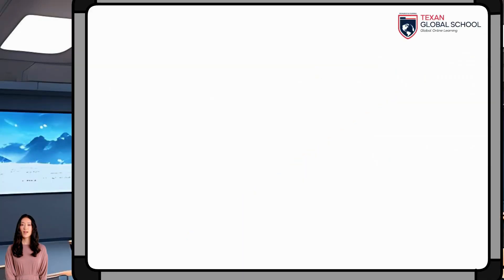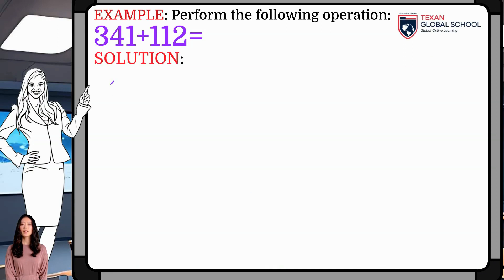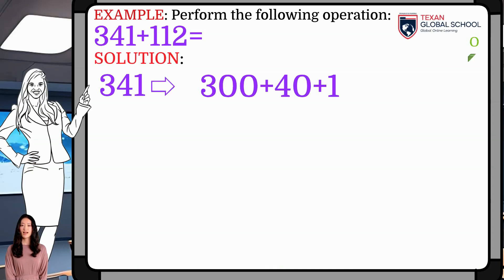Now, let us add 341 plus 112. First, decompose each addend into 1s, 10s, and 100s.